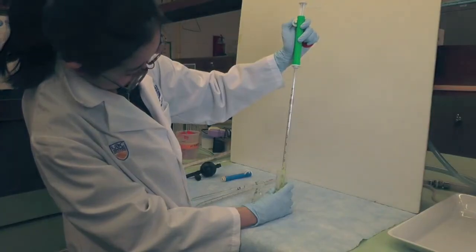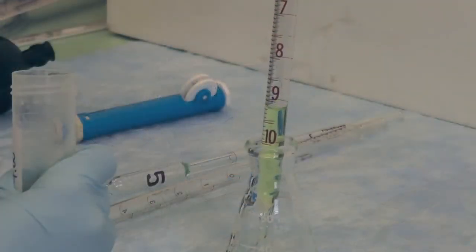For a Mohr pipette, you should stop pushing the pump when the target line is reached for accurate volume delivery.